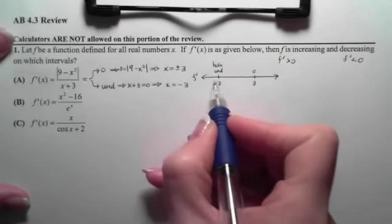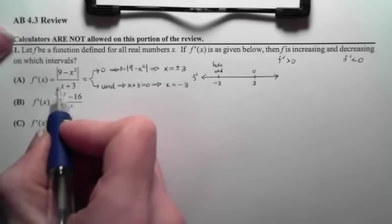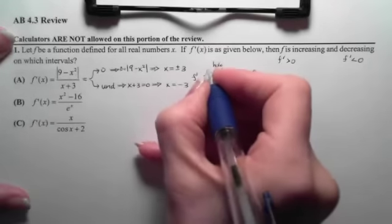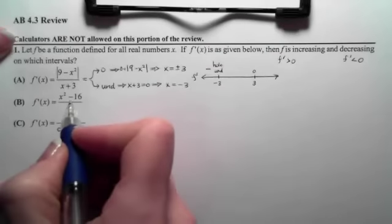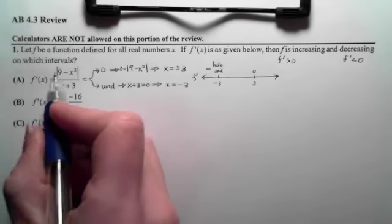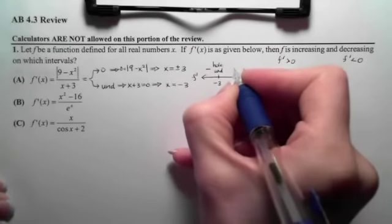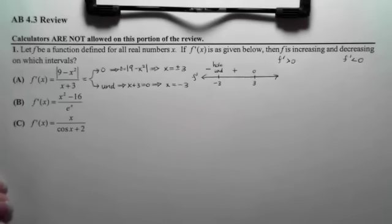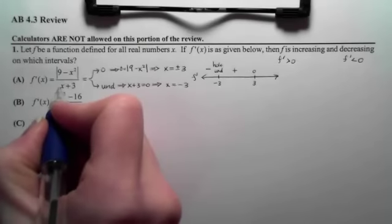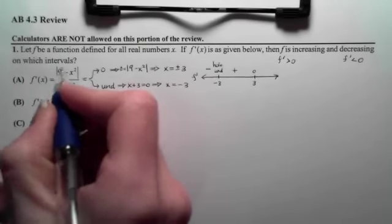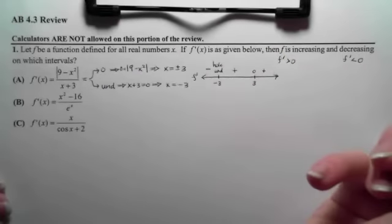If I choose numbers that are smaller than negative 3, I can see that the bottom will be negative and the top will be positive. If I choose a number between, the bottom will be positive and the top will still be positive. And if I choose a number bigger than 3, again, I will still have a positive on the bottom and a positive on the top.